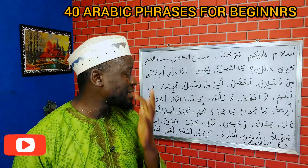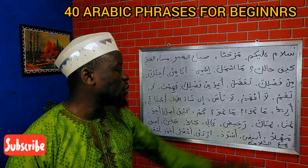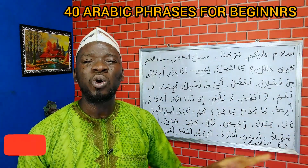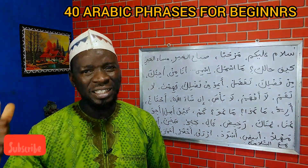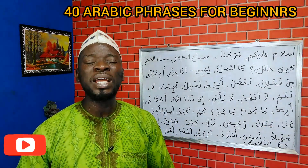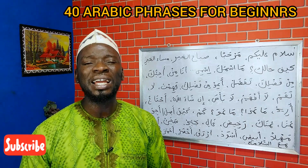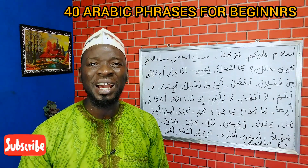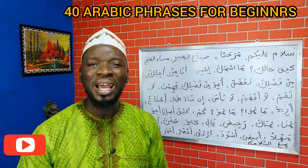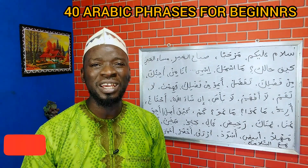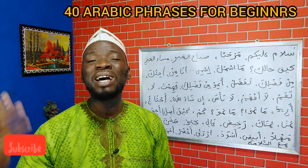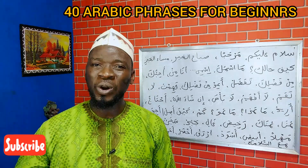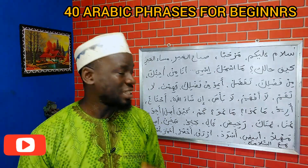Huna means here. Huna atakallam — I am talking here. Hunaka means over there. Takallamtu hunaka — I spoke over there yesterday.